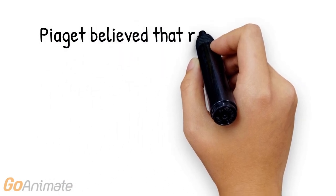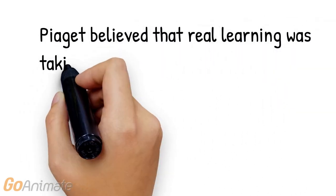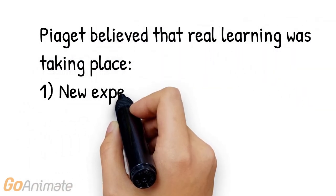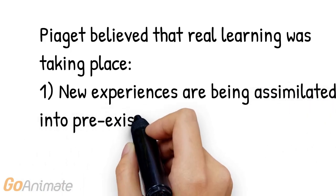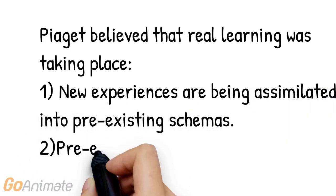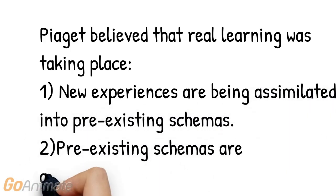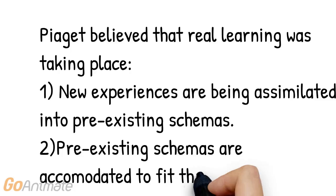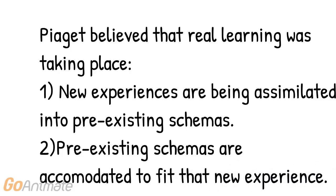Piaget believed that children really learn from interacting with their environment. Conceptually, Piaget believed that real learning takes place when new experiences are being assimilated into pre-existing schemas, or when pre-existing schemas are being accommodated to fit a new experience.